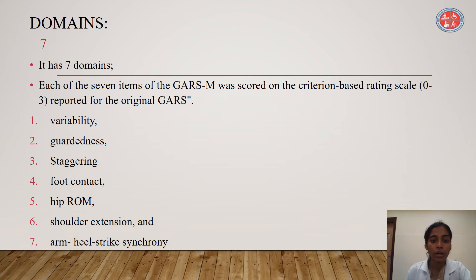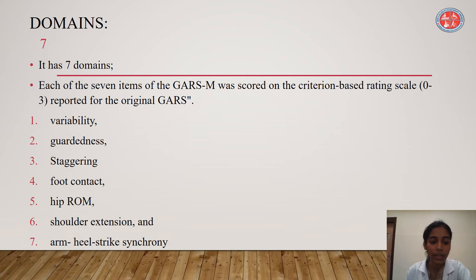The modified version has 7 domains: variability, guardiness, staggering, foot contact, hip ROM, shoulder extension, and arm heel strike synchrony.